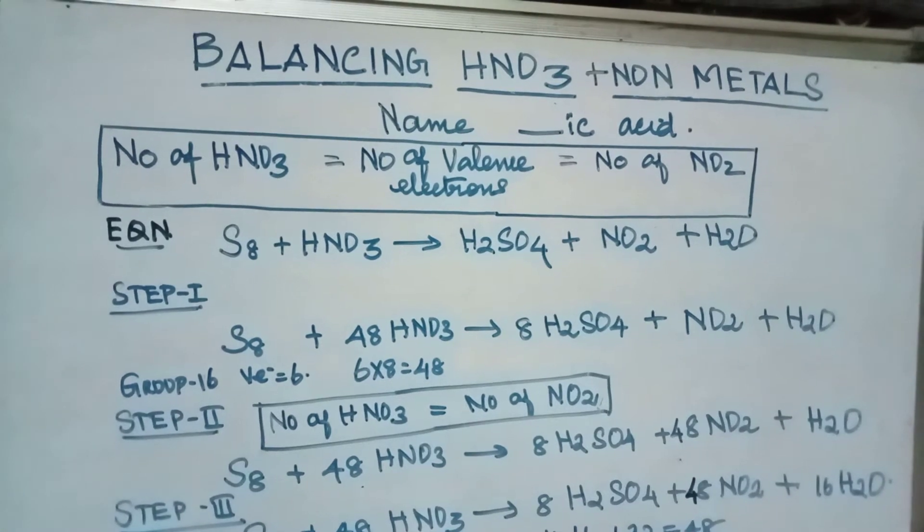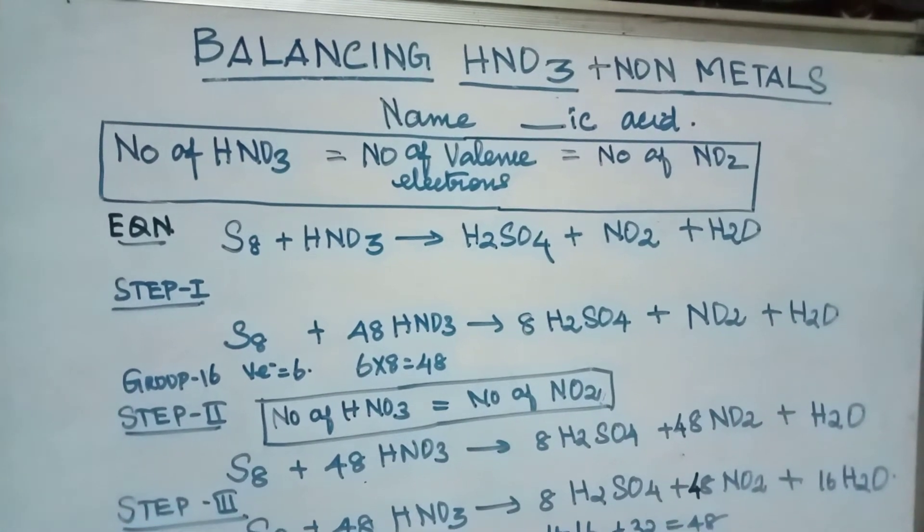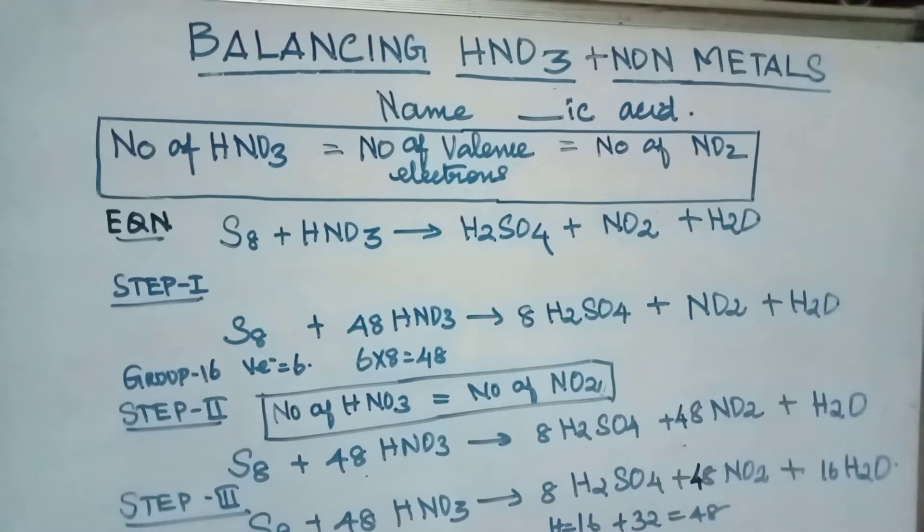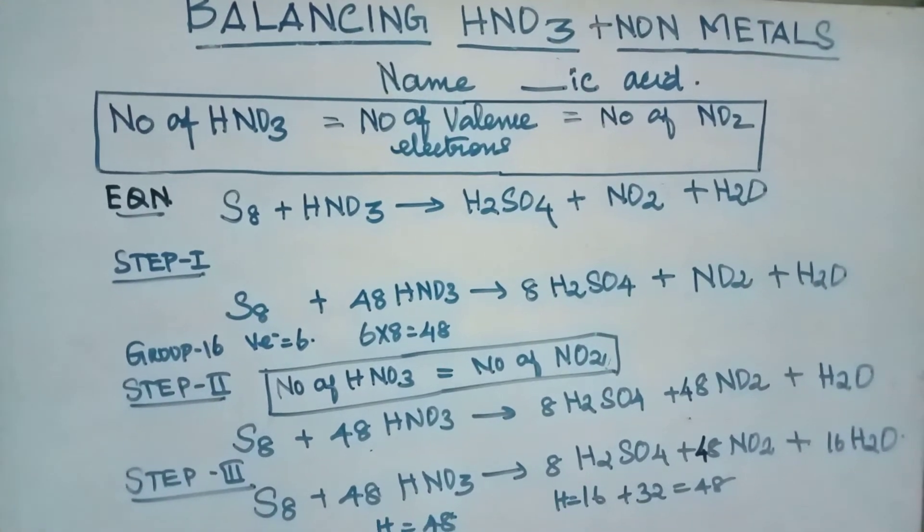Already 8 sulfur atoms are there, so we will balance H2SO4. Then, we will balance the remaining NO2 and H2O. Okay.